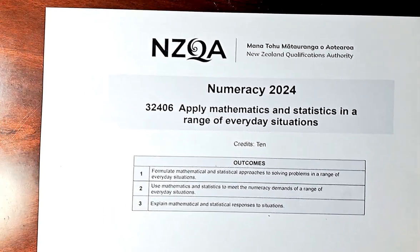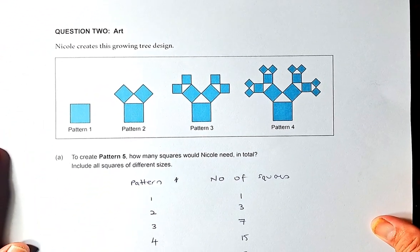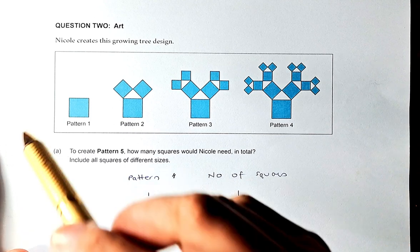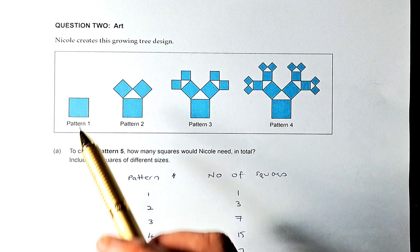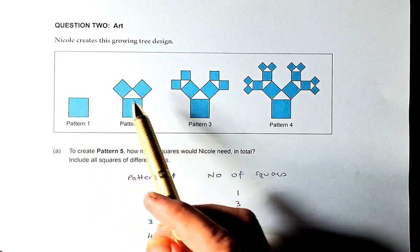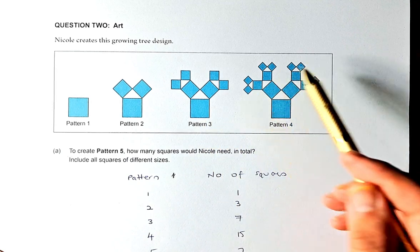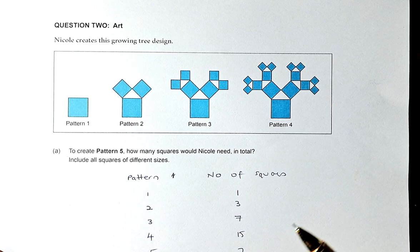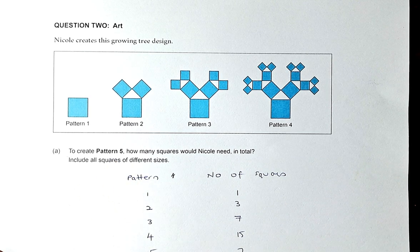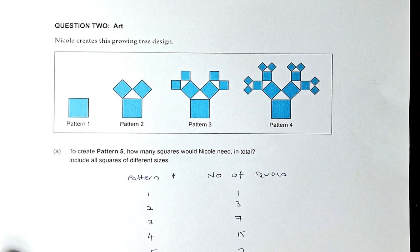2A is about art. So this is pattern 1, 2, 3, 4. Nico creates a growing tree design. Pattern 1 has one square, Pattern 2 has three squares, Pattern 3 has seven squares, and Pattern 4 has 15 squares. They ask you to count what will be the number of squares in pattern 5. You can draw the diagram if you want but it's going to take a lot of time. So we're going to use mathematics to solve this.